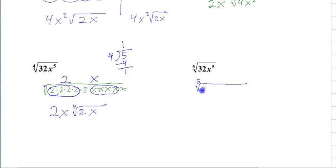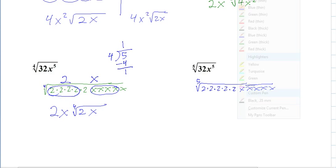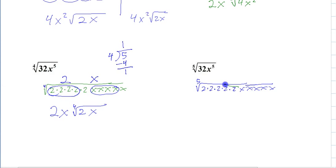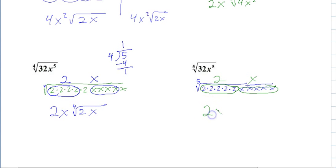So we have 5th root, and with 5th roots, you guessed it — you need groups of 5. There's 5, there's 5, and notice there's nothing left inside. So it's just 2x.